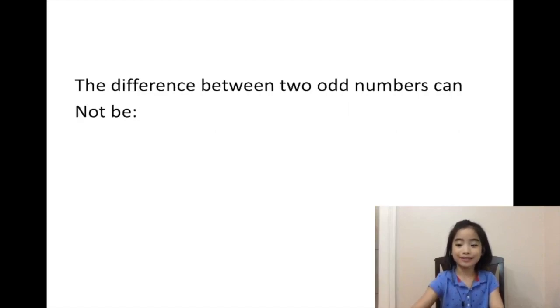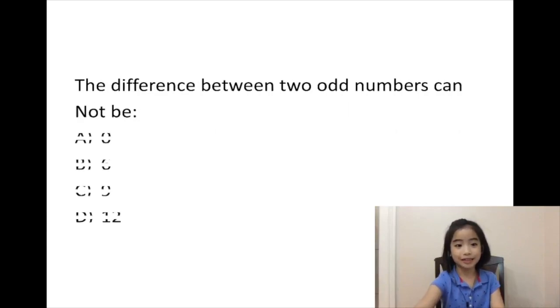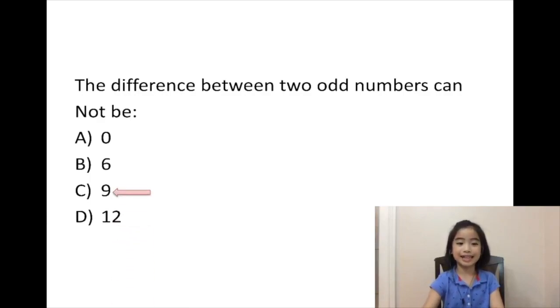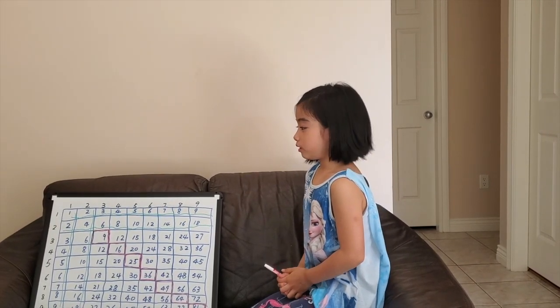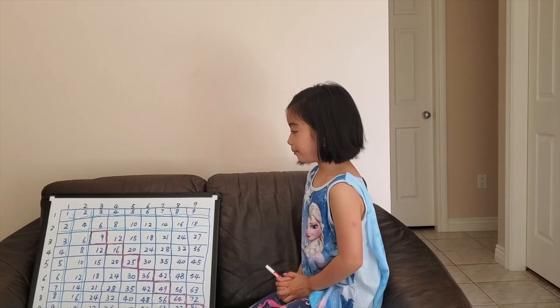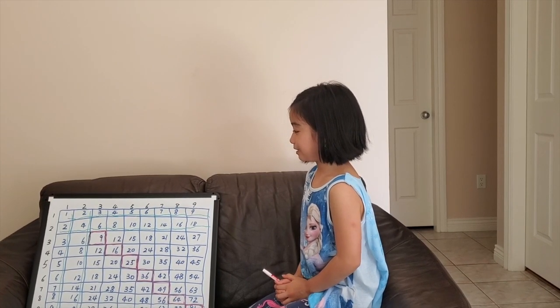Back to the question. 9 is the only odd number. So 9 is our answer. These are the entries where you multiply a number by itself.